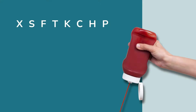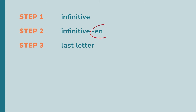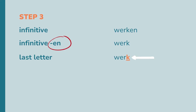Before we use the letters of ex soft ketchup, there are a few steps to take. Step one: take the infinitive of a verb. Step two: take the -en off of it. Step three: take a look at the last letter. Here's an example — the verb 'werken.' This is an infinitive. When we take off the -en, you will get 'werk.' The last letter is a k. And now comes the ex soft ketchup rule.